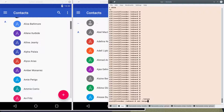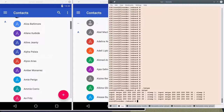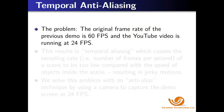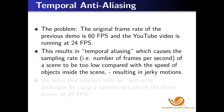If you want to see what the shell script looks like, it is in the next frame. We have a problem observing the smooth frame rate of 60 frames per second in a YouTube video running at 24 frames per second. The reason for this is temporal aliasing — it's caused when the sampling rate of 24 frames per second is too low compared to the speed of objects inside the scene. This results in jerky motions.